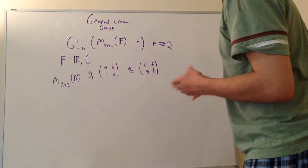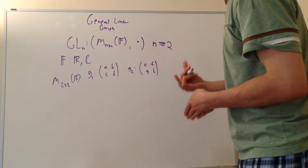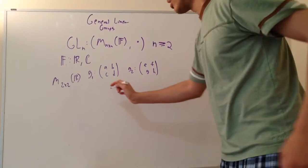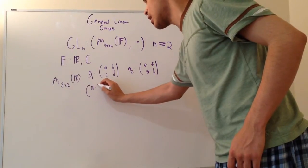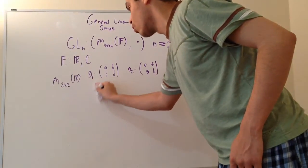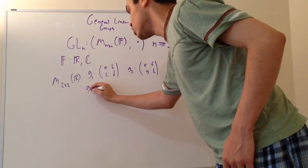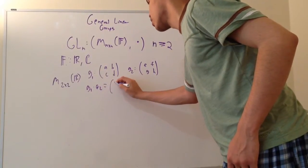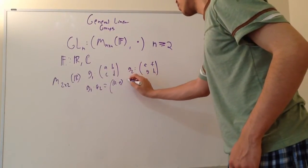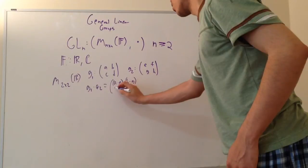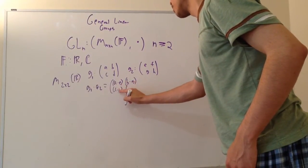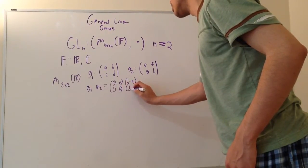Just to get the point across — you can prove it for n-by-n, but it's easiest for 2-by-2 because there are fewer symbols to worry about. So let's check closure. If we want to do matrix multiplication and go through all the steps, we have g1 times g2: we're going to have a times e in the first position, b times g in the second, c times f, and then d times h.